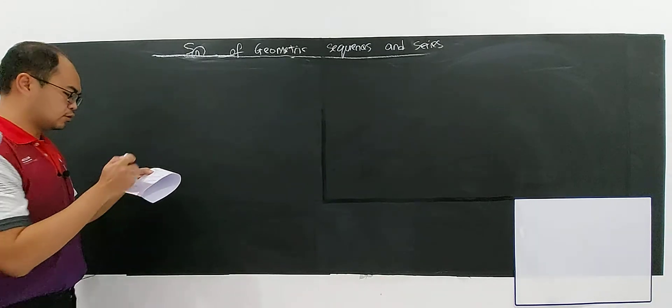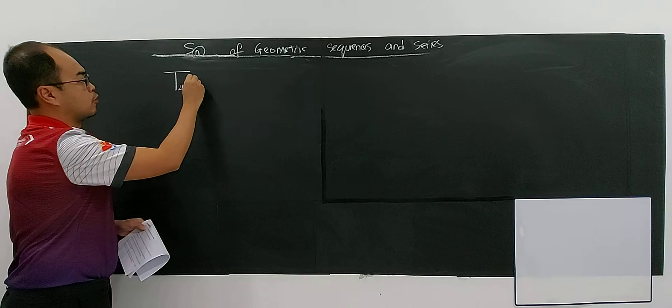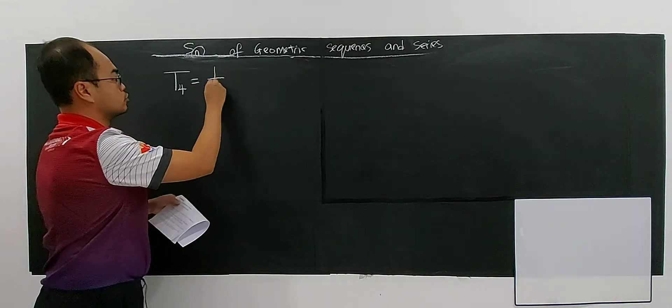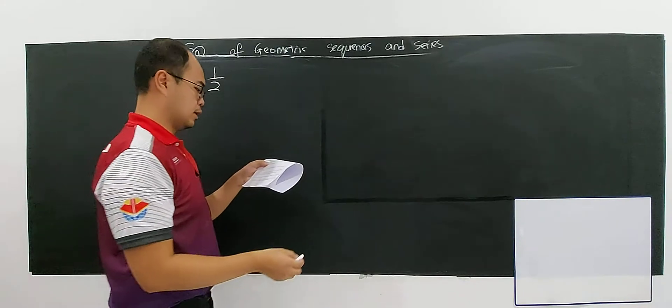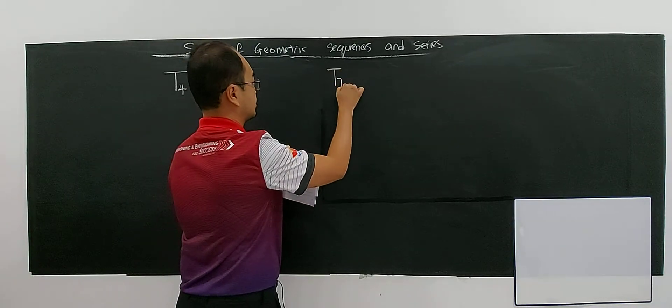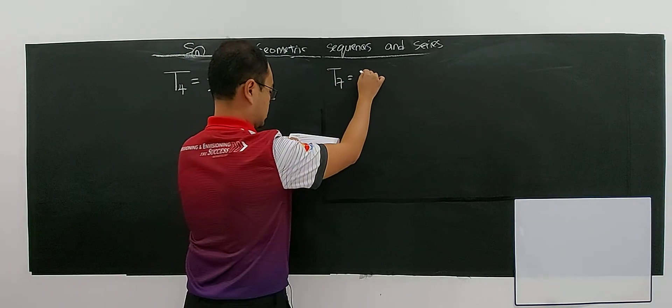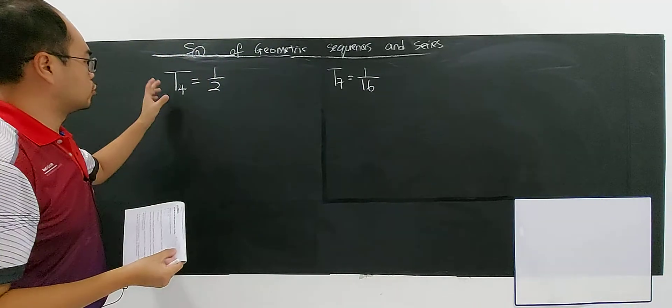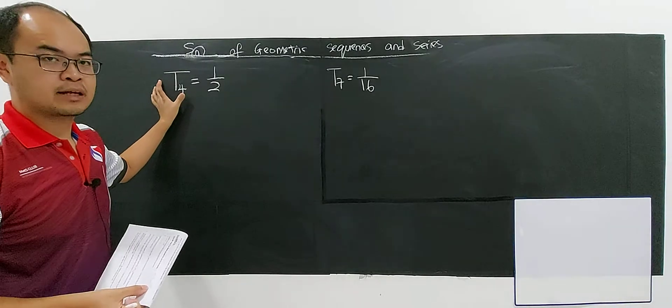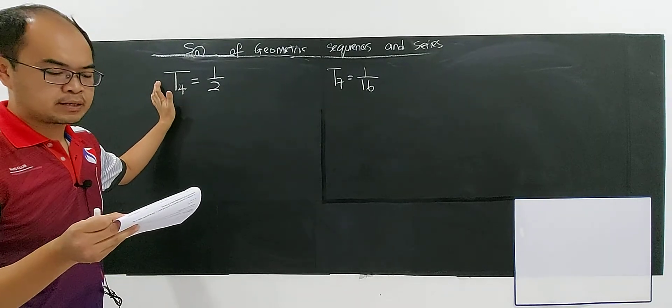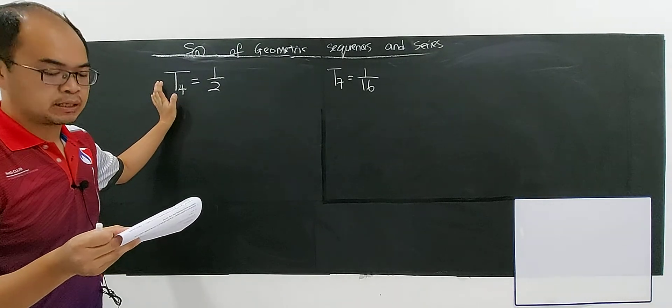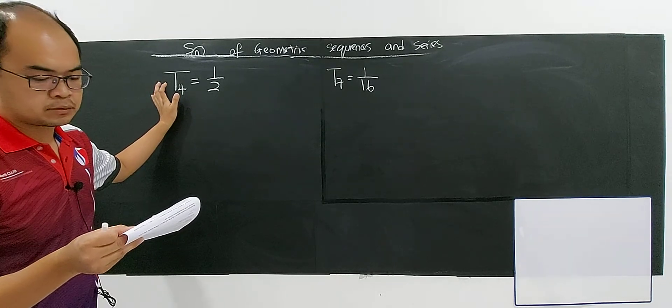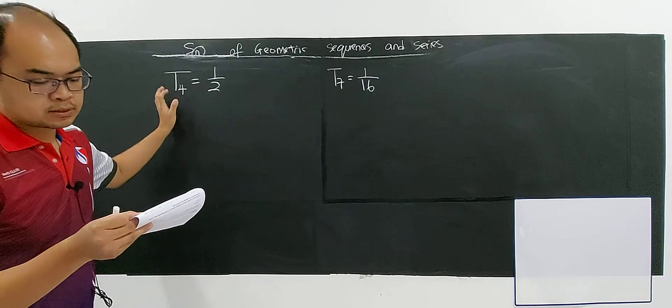So the 4th term means T4 is 1 over 2, and the 7th term, the 7th term is 1 over 16. So you have to write correctly. It's not S, because if S they will write the sum of the 4th term. But this is the 4th term and the 7th term, 1 over 2 and 1 over 16.